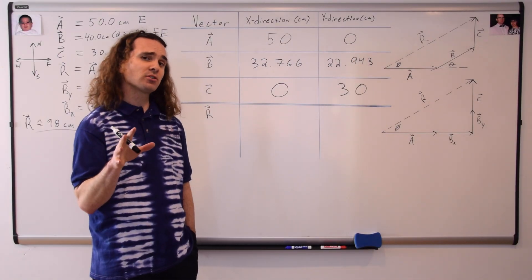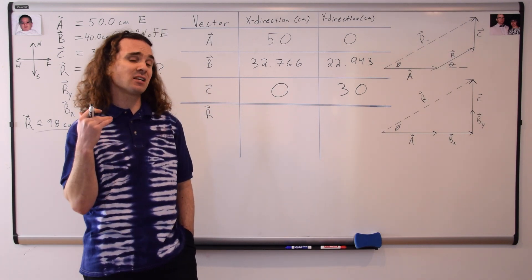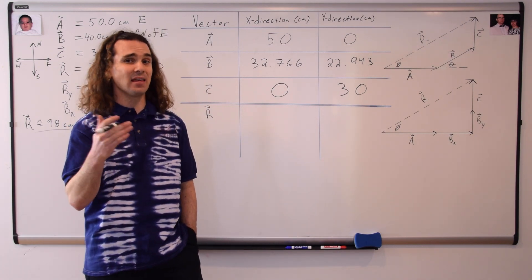Notice that all of the numbers are positive because all of our components were either north or east. If any of the components had either been south or west, they would be negative.